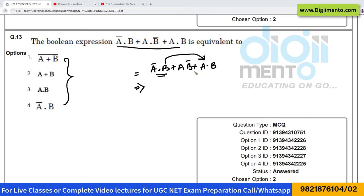I can take B as common, so it will become (A̅ + A)·B + A·B̅.